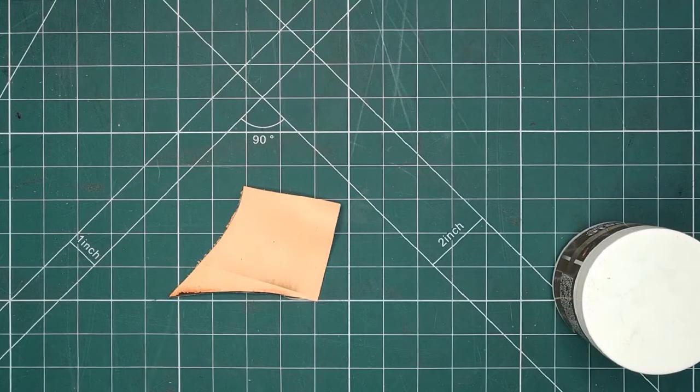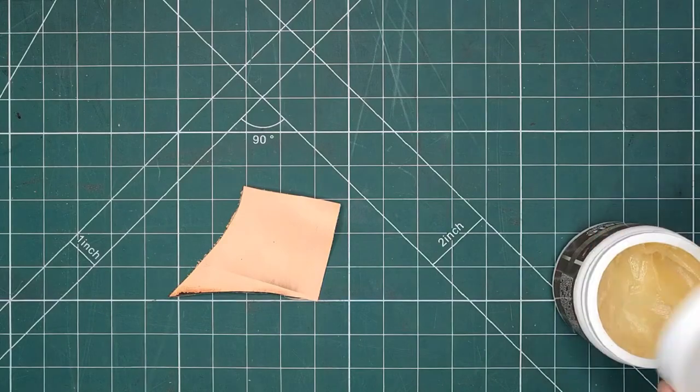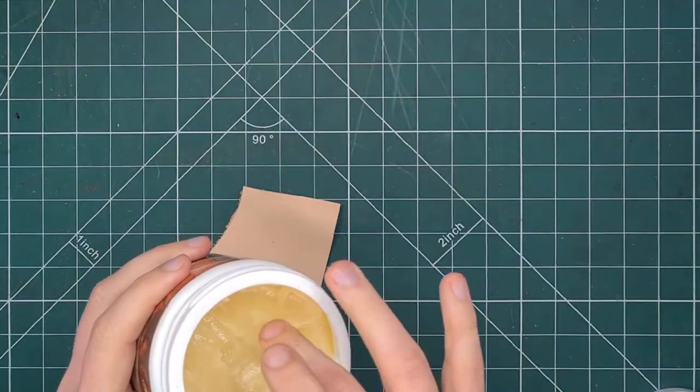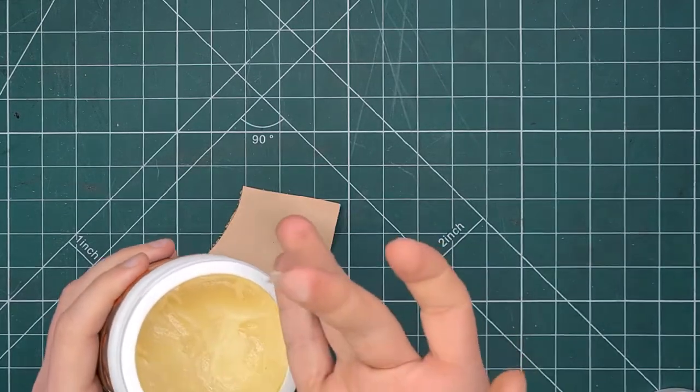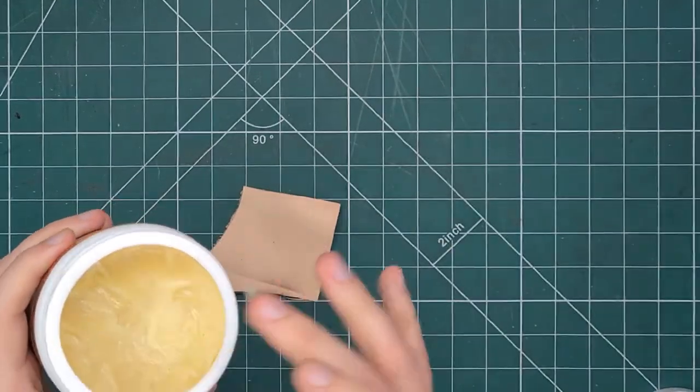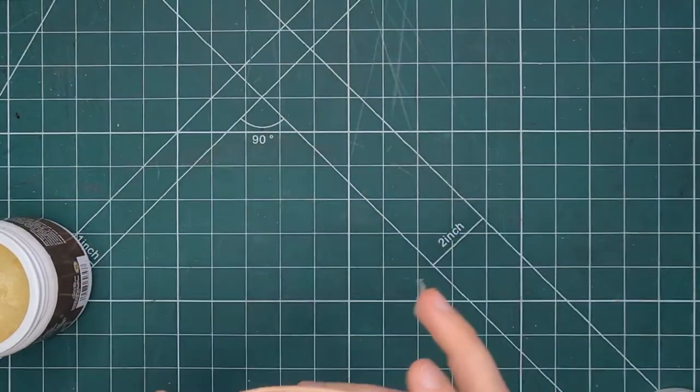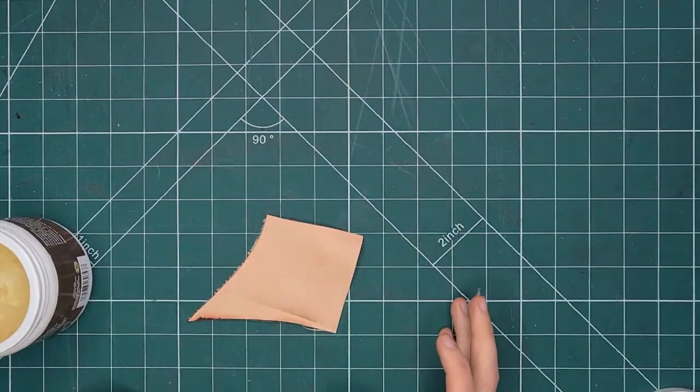I normally just apply it with my finger. You'll need a small amount—if you're doing a bigger piece, obviously you'll need a little bit more. I'm just going to demonstrate on this piece of vegetable-tanned leather. If you use this on suede, it will get rid of the suede effect.